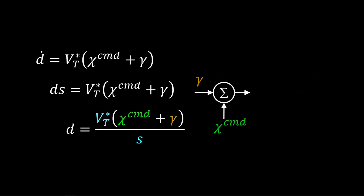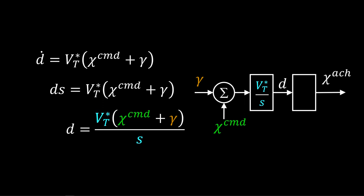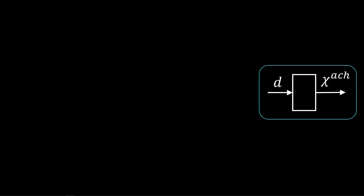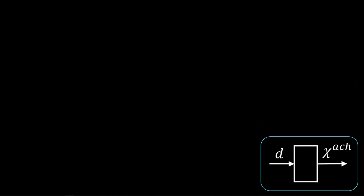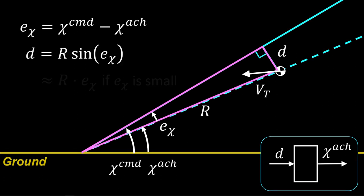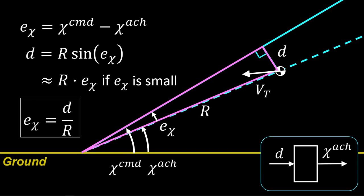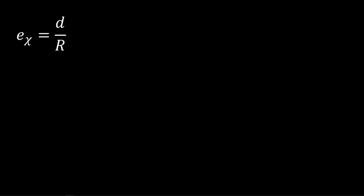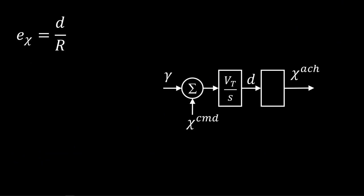In block diagram form: the commanded glide slope input, the achieved flight path angle, times trimmed airspeed over S gives D. Now we want a relationship between D and the achieved glide slope. We already established the glide slope error. Note that D is range times the sine of glide slope error. Another small angle approximation gives error as D over R. With this simple formula, we can relate D to glide slope.